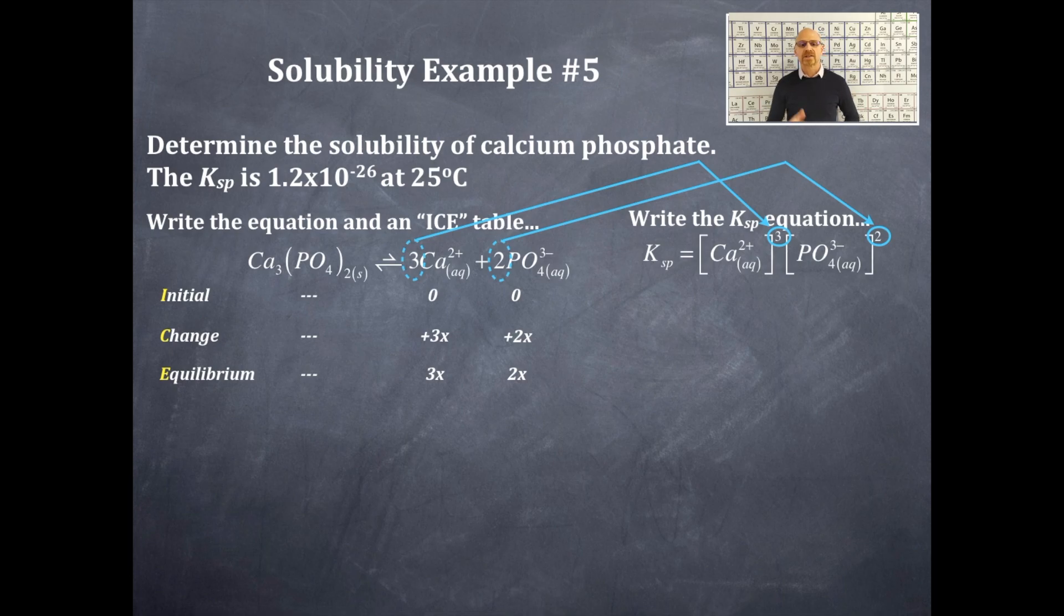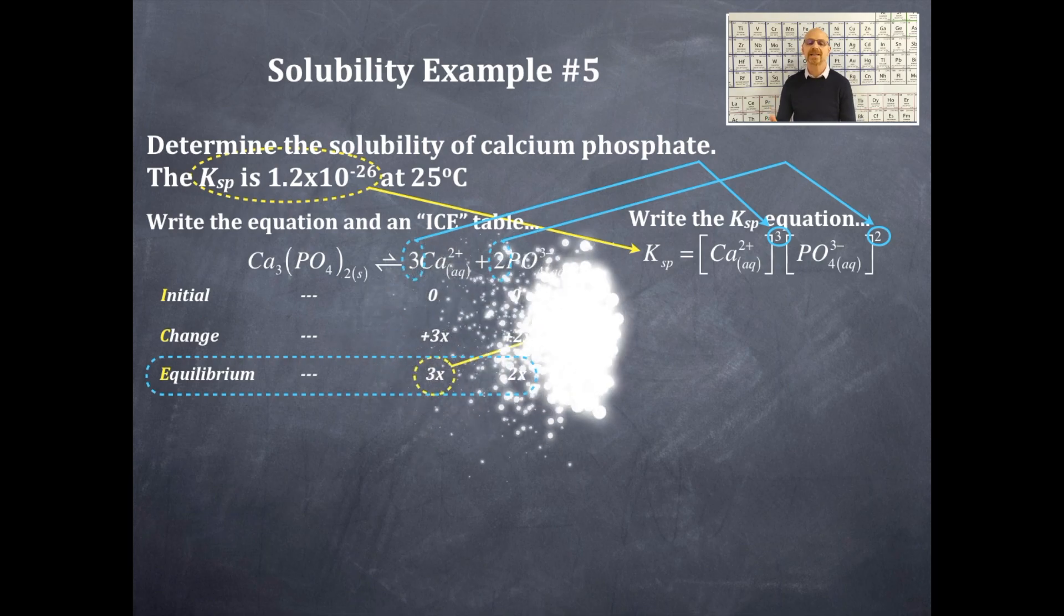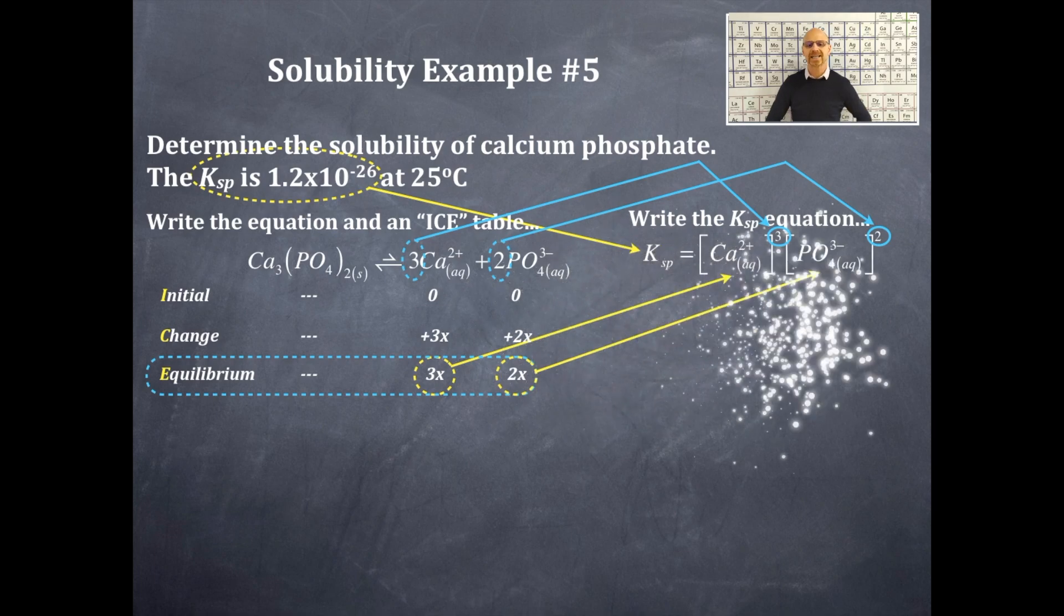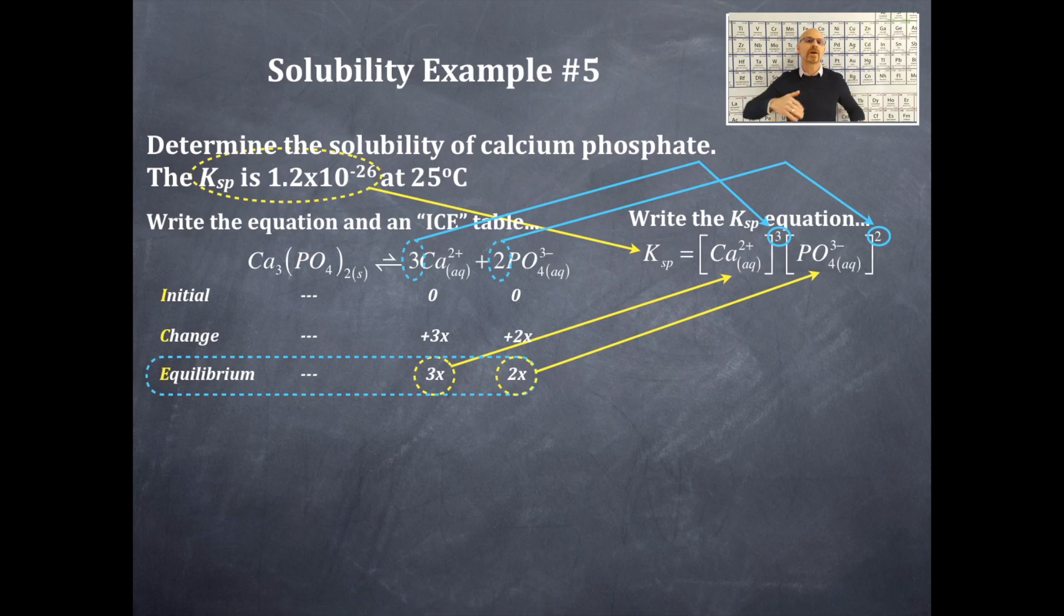Now where's the Ksp? Well this is given to me in the problem at 1.2 times 10 to the negative 26. So what I'm going to do is I'm going to plug in my equilibrium values into that Ksp expression. I'm going to substitute in instead of the calcium ion, 3x. Instead of the phosphate ion, 2x. Notice that this is the most complicated problem that we have done and we have stepped through this very slowly to get to this point here mathematically. So I've substituted everything in here for you. I've got 1.2 times 10 to the negative 26, that's my Ksp value, equal to 3x quantity cubed times 2x quantity squared.